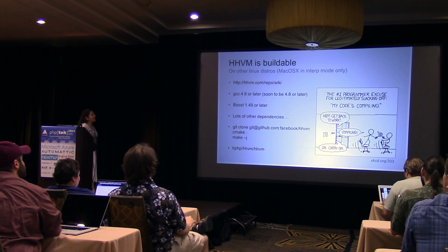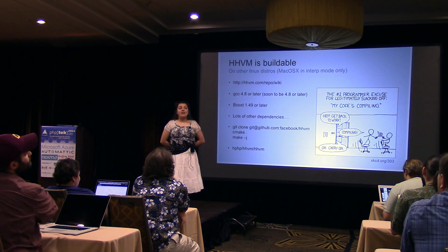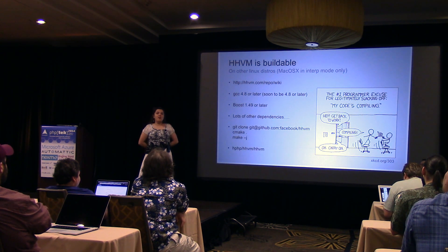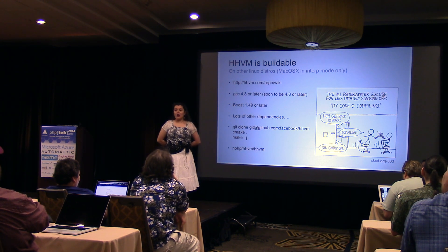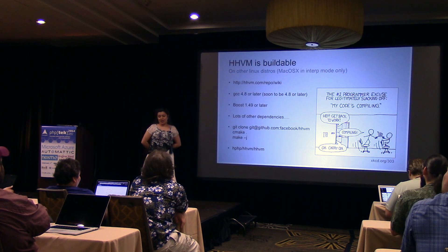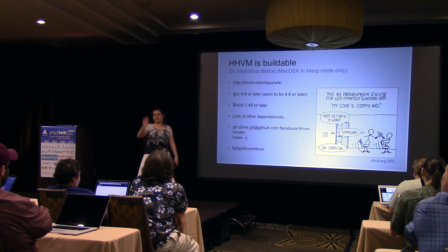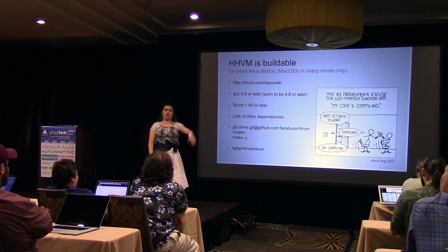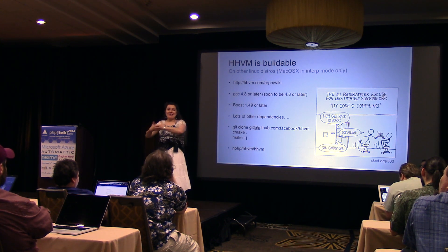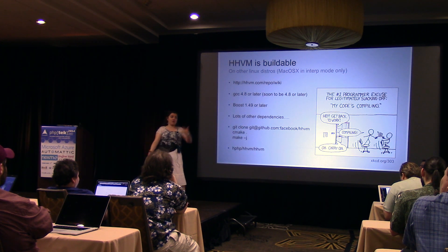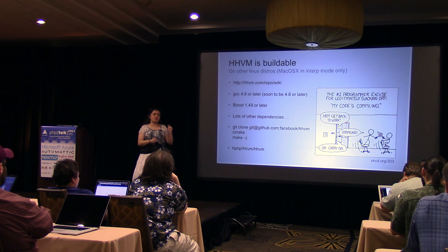HHVM is buildable, but here's something you probably don't want to hear: at last count there were 45 dependencies — including all of Boost, which takes all night to build on an I7. This is changing, because most of the modules used to have to be statically compiled into HHVM. Extensions have been changed so that a lot of those libraries are actually extension libraries. The core dependency count is down to about 10 libraries. You'll need GCC 4.8; it almost works on leading-edge Clang, and Visual Studio support is coming.